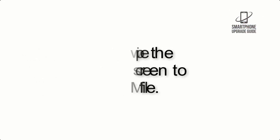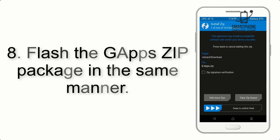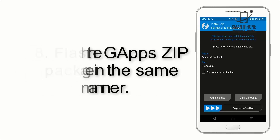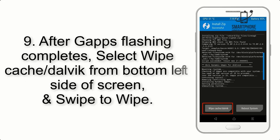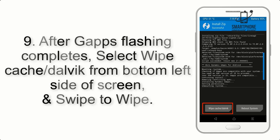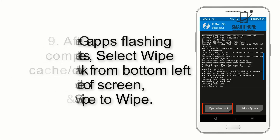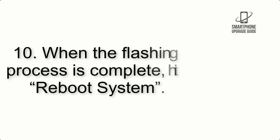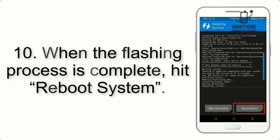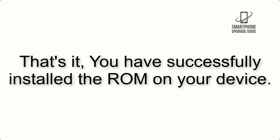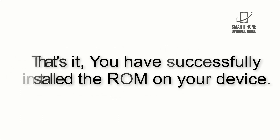Step 7: Swipe the button on screen to install the ROM file. Step 8: Flash the GApps zip package in the same manner. Step 9: After GApps flashing completes, select Wipe Cache and Dalvik from the bottom left side of the screen and swipe to wipe. Step 10: When the flashing process is complete, hit Reboot System. That's it — you have successfully installed the ROM on your device.